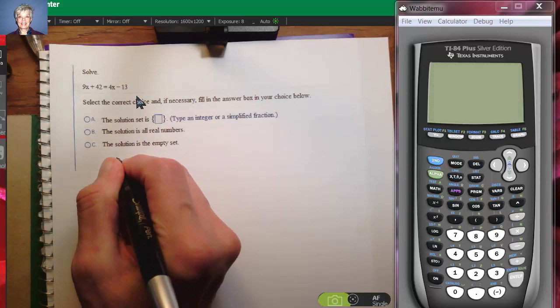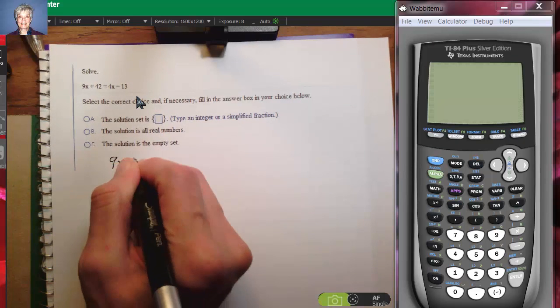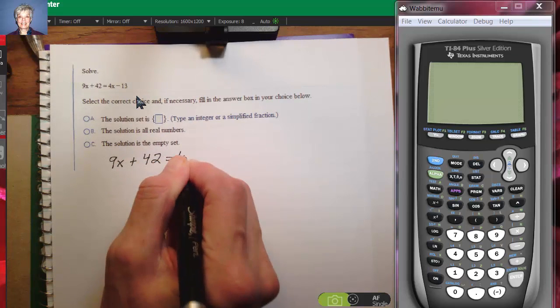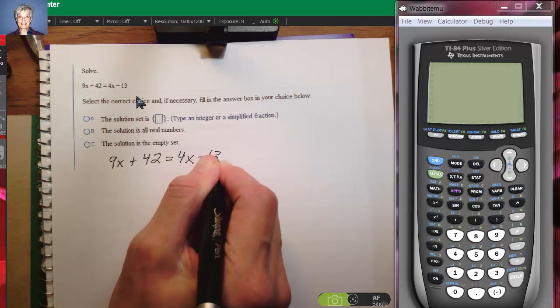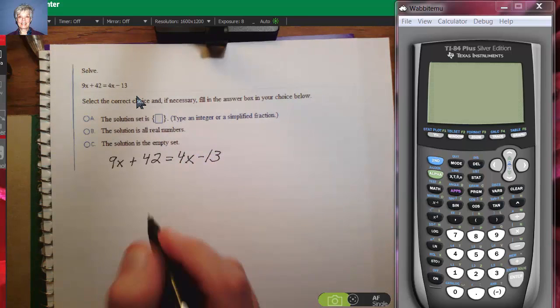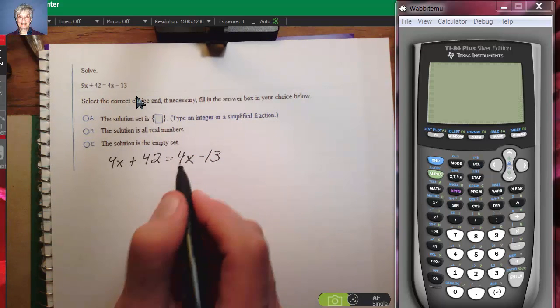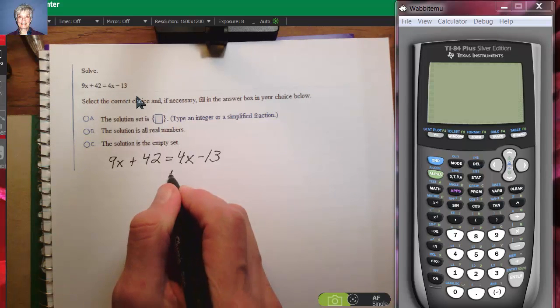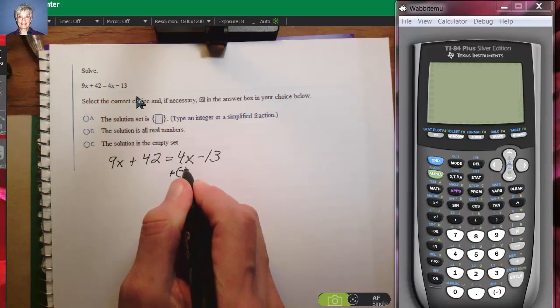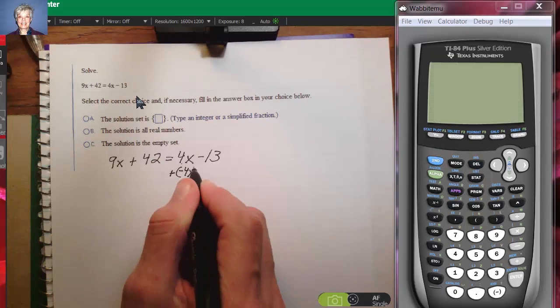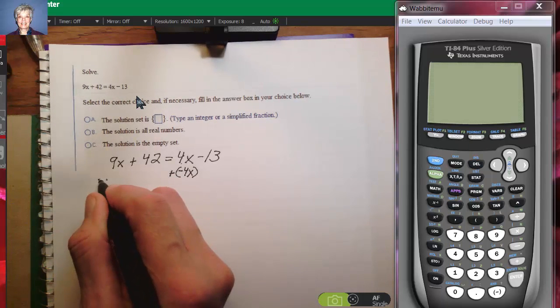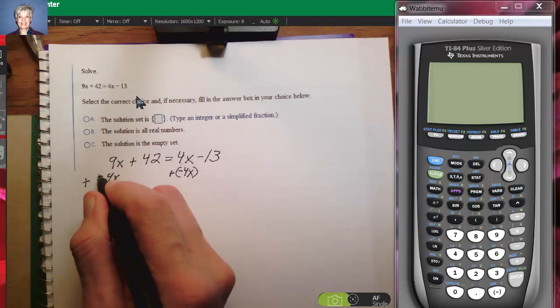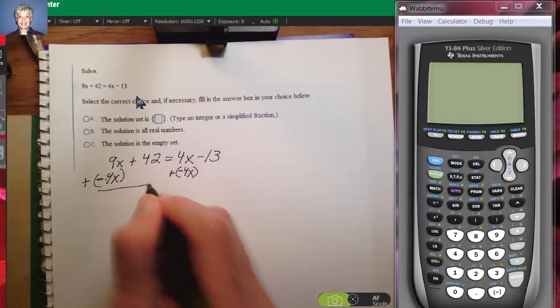I'm starting out with 9x plus 42 equals 4x minus 13. Now if I add the opposite of 4x, which will be negative 4x, to both sides of the equation like this.